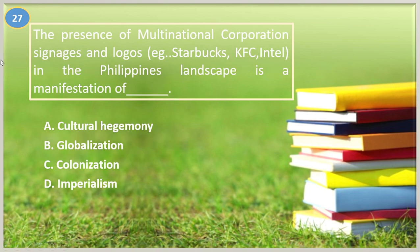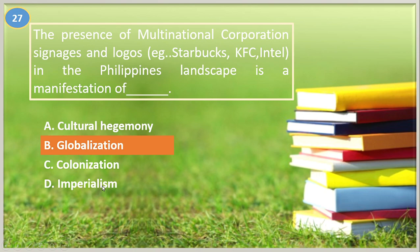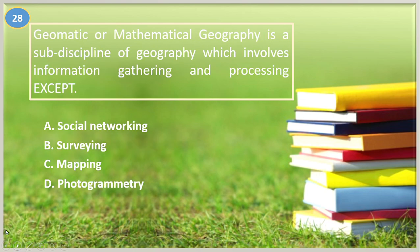Number twenty-seven. The presence of multinational corporation signages and logos — such as Starbucks, KFC, and Intel — in the Philippine landscape is a manifestation of: A. Cultural hegemony, B. Globalization, C. Colonization, D. Imperialism. The answer is globalization, letter B.